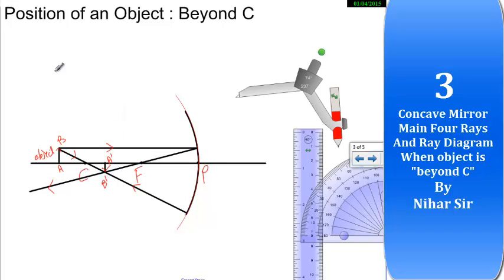Now I have to write three information from this ray diagram. What are the information? Position of an image. So what is the position of an image? Where I found my image? I found my image between C and F - between center of curvature and principal focus.